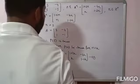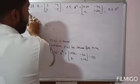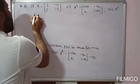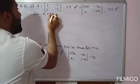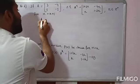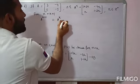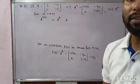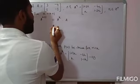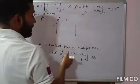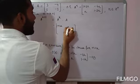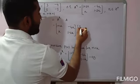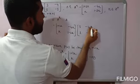Step 4: for n equal to k+1, we prove LHS equals RHS. A to the power k+1 can be written as A to the power k times A. Substituting: [1+2k, −4k; k, 1−2k] multiplied by [3, −4; 1, −1]. Now multiply these two matrices row by column.